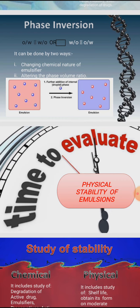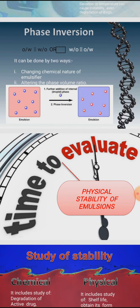In the first method, an O/W type emulsion is prepared using sodium stearate. If calcium chloride is added to this emulsion, calcium stearate is formed, which is oil soluble. Therefore, the oil phase becomes the continuous phase and a W/O emulsion is produced. One example is white liniment, prepared in dispensing pharmacy, where phase inversion occurs.